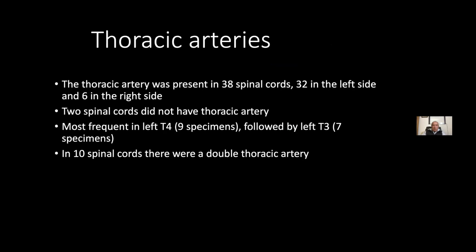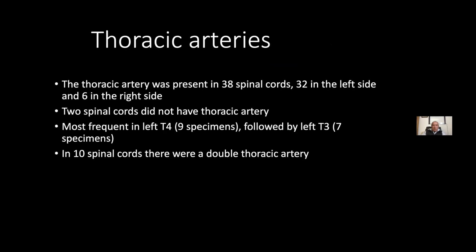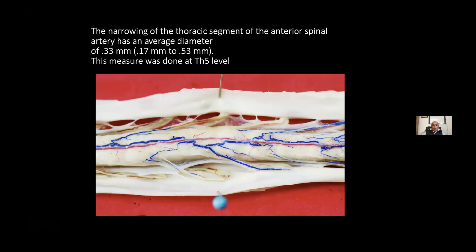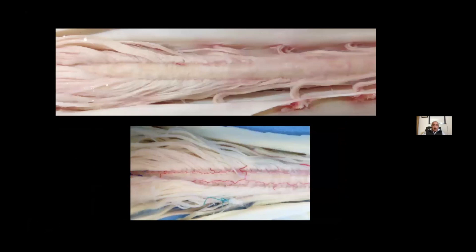There is no doubt about the existence of this artery. The thoracic artery was present in 38 spinal cords: 32 on the left side and six on the right side. These are very small thoracic arteries. The anterior spinal artery running through the narrow thoracic segment has an average diameter of 0.33 millimeters.